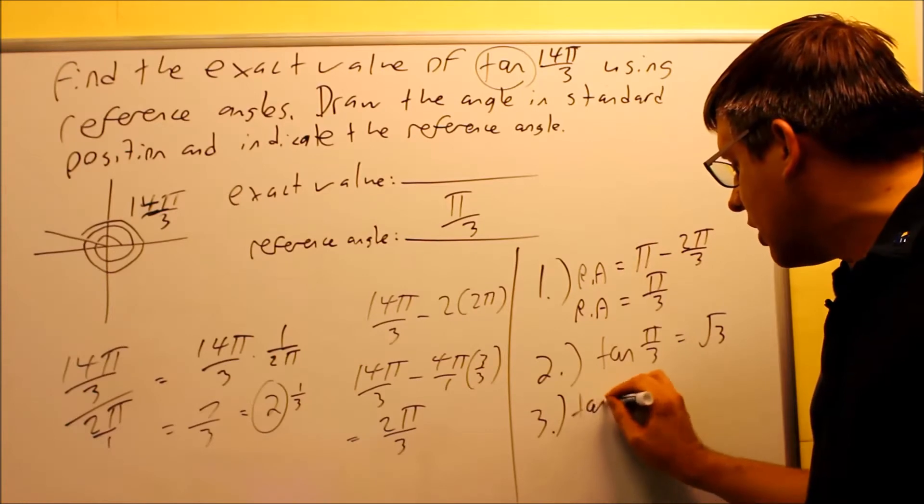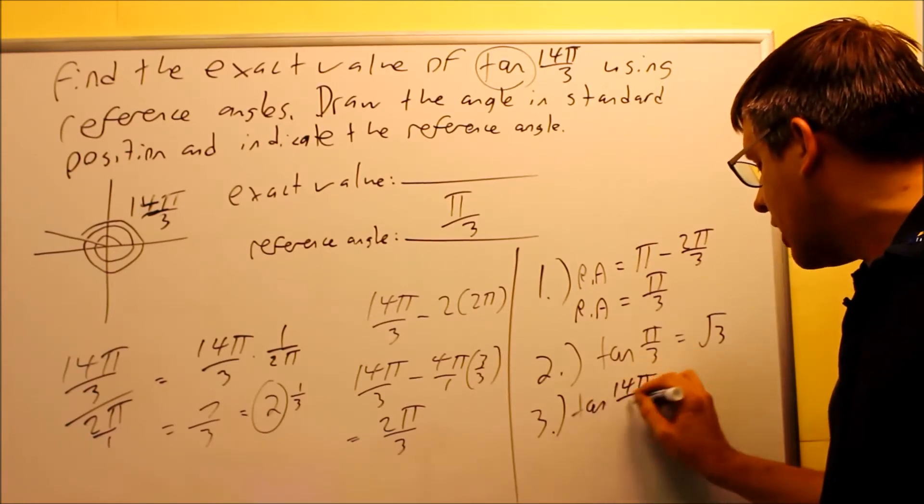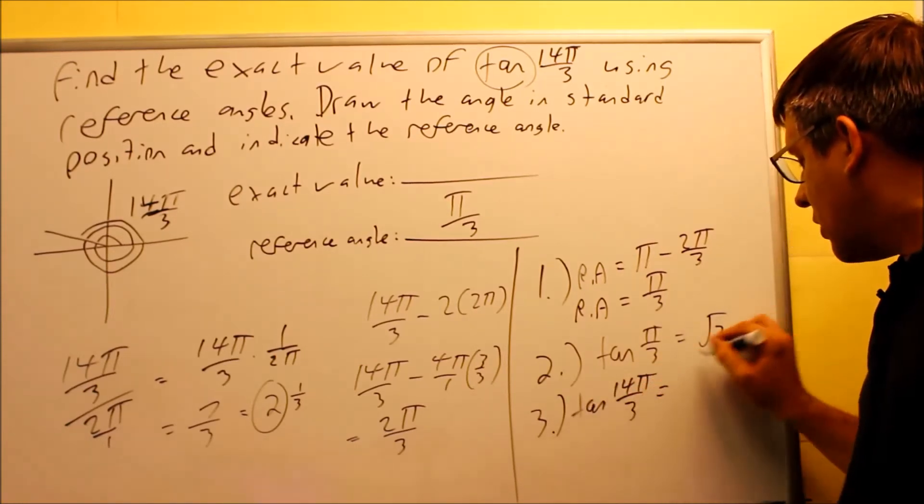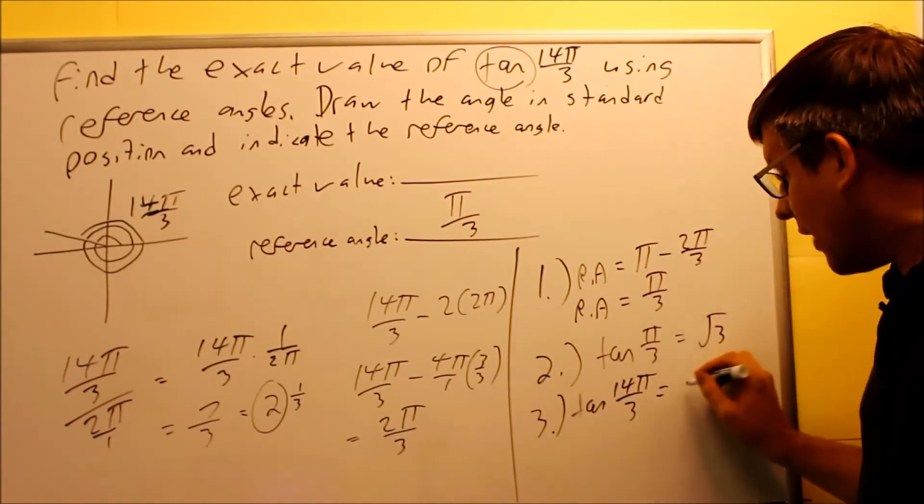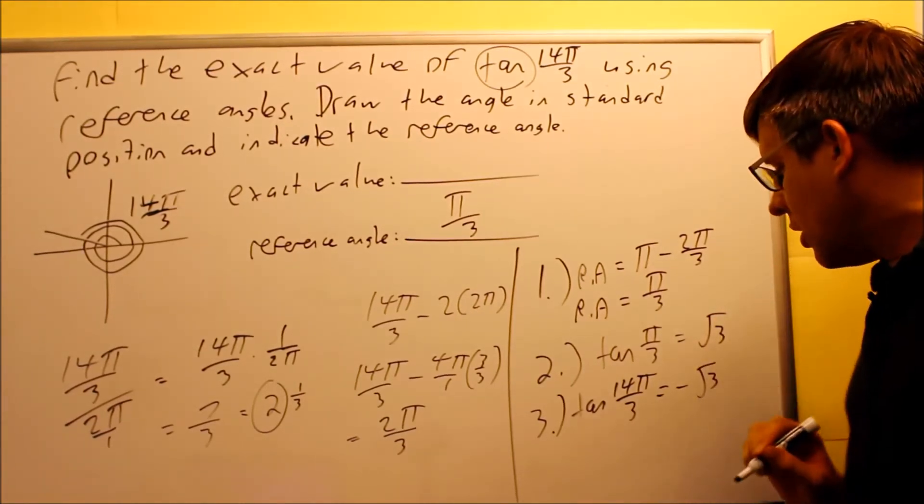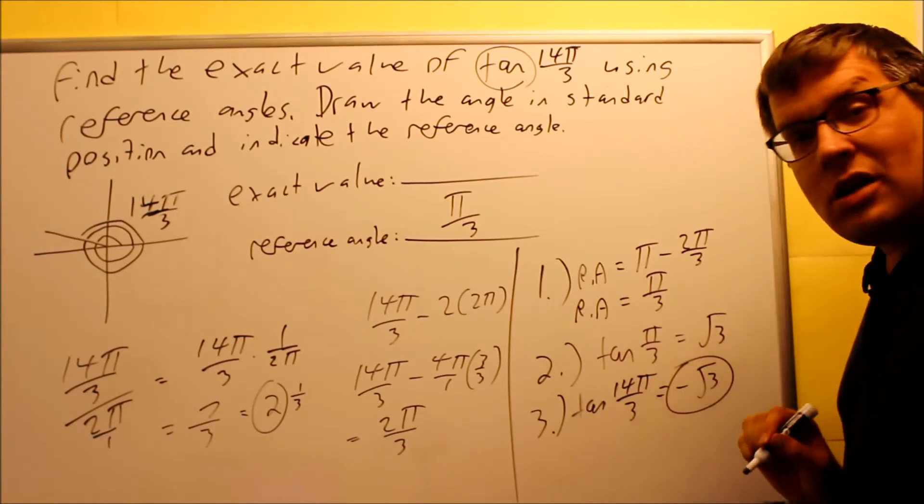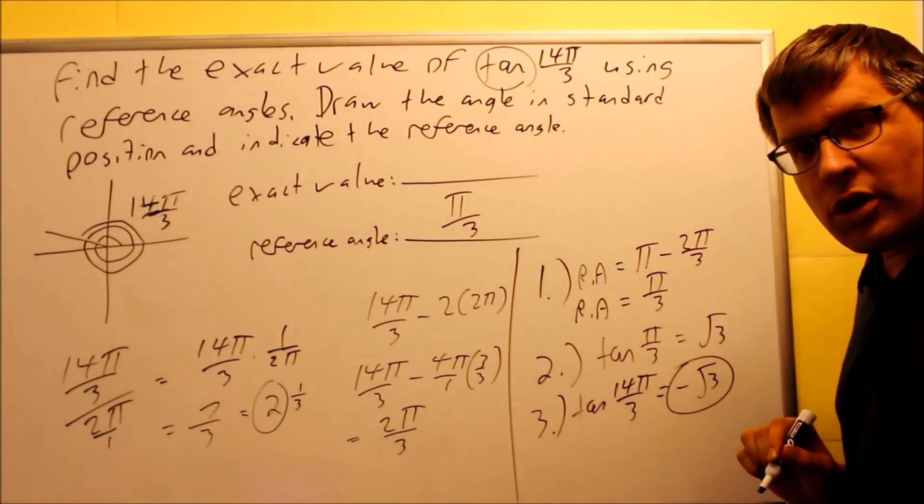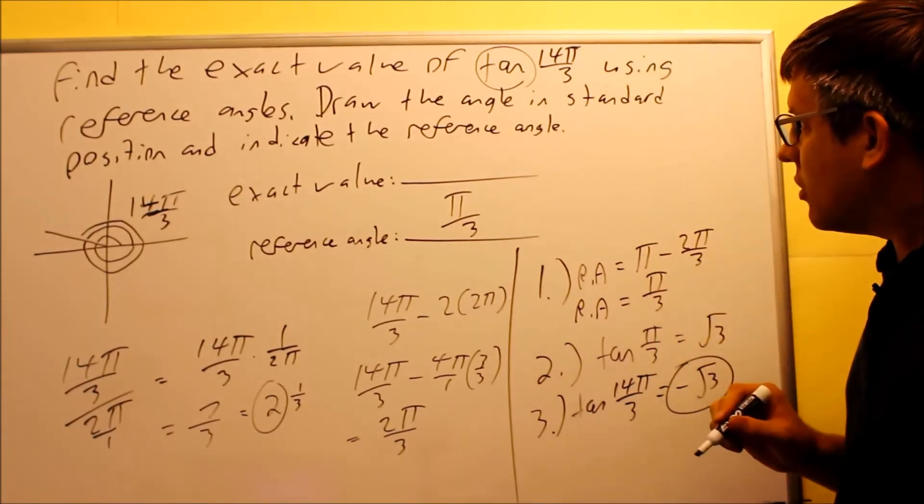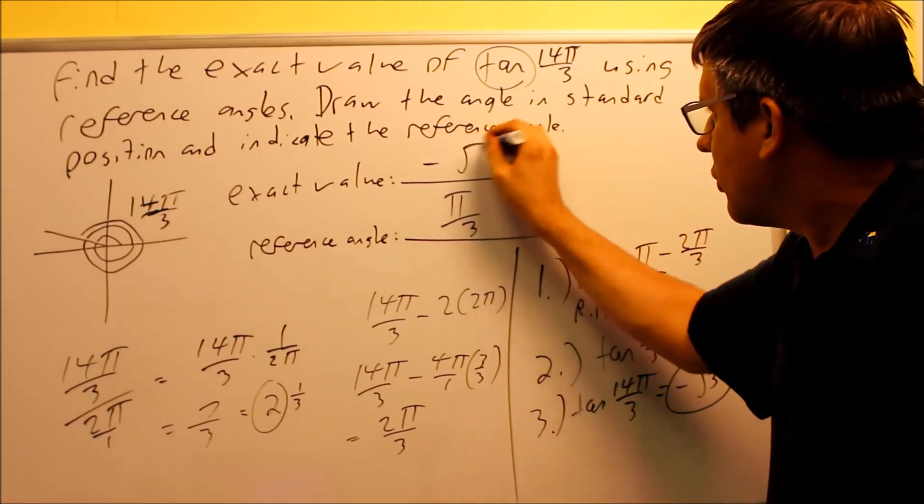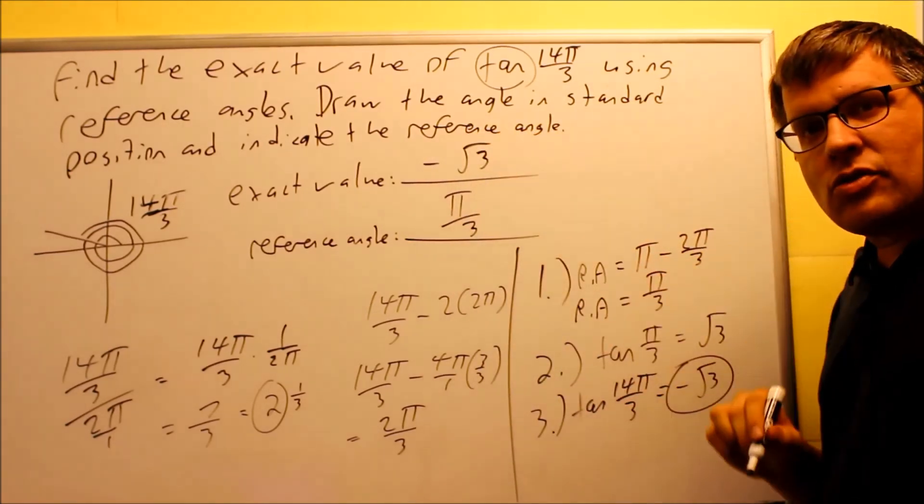So when I write my answer, tangent 14π over 3, I need to actually make, I'm going to use the same value that I got in step two, but I have to apply a negative sign to it. So my final answer is going to be negative square root of 3. That would be the exact value for tangent 14π over 3, so I'll just put this down on my blank, and that answers the question.